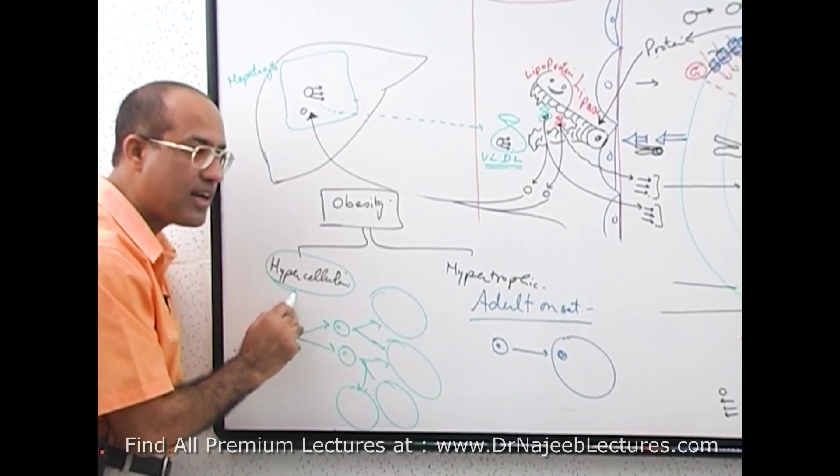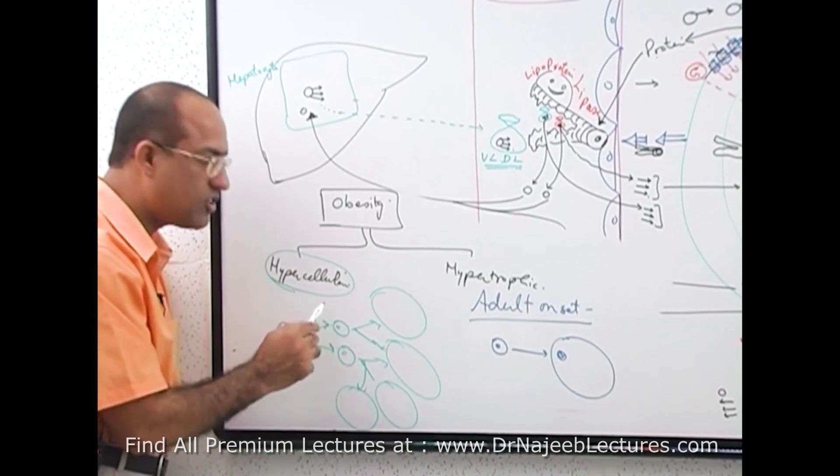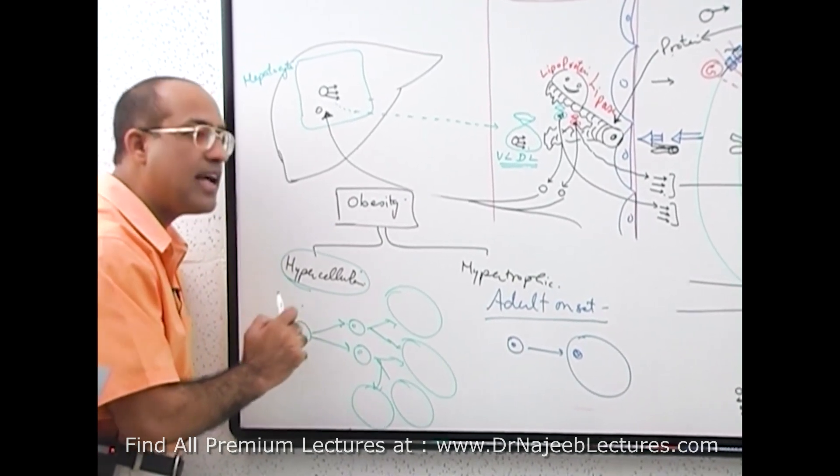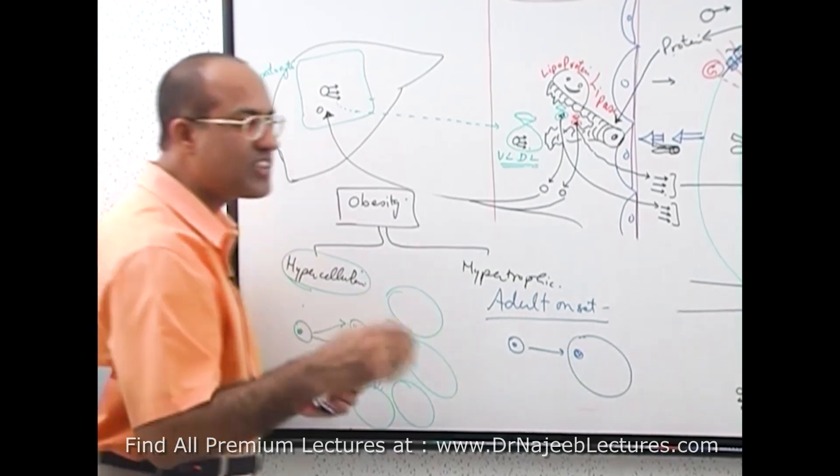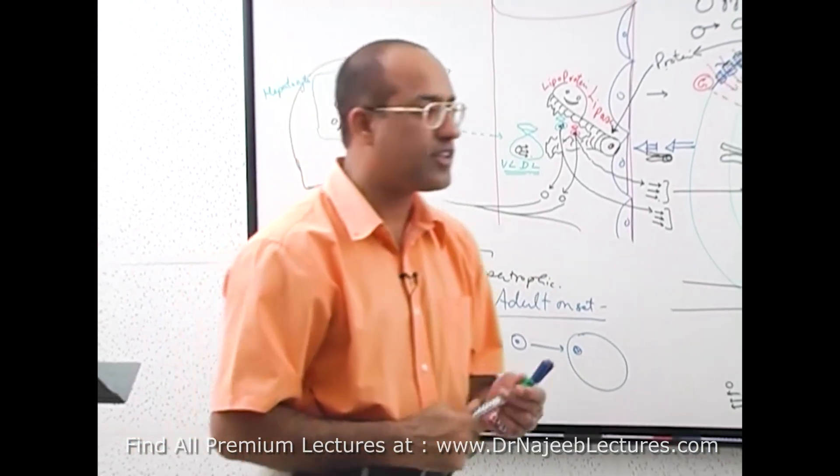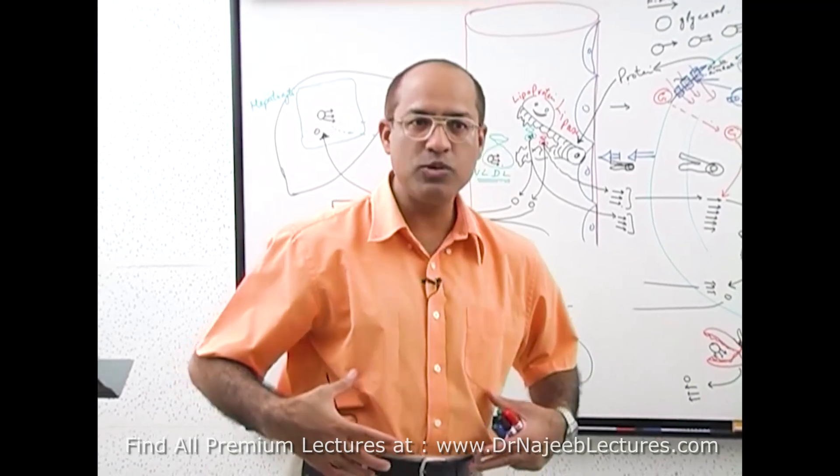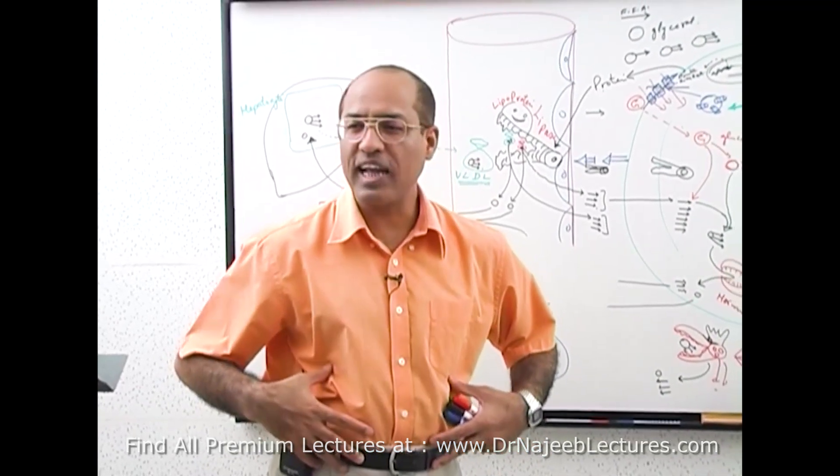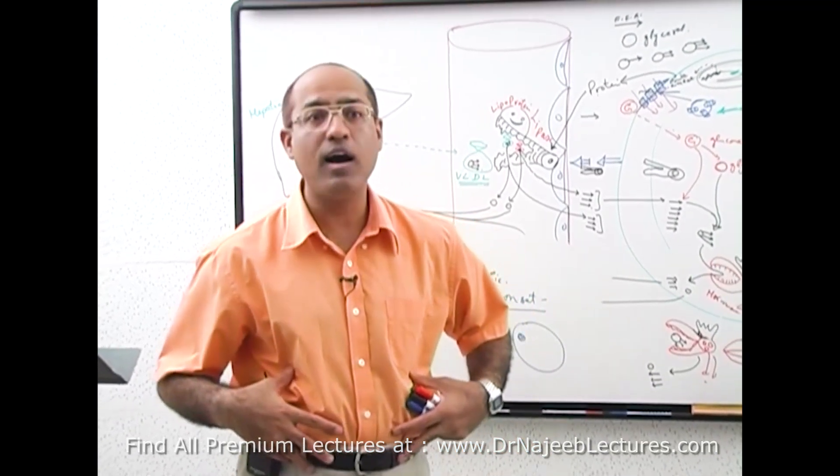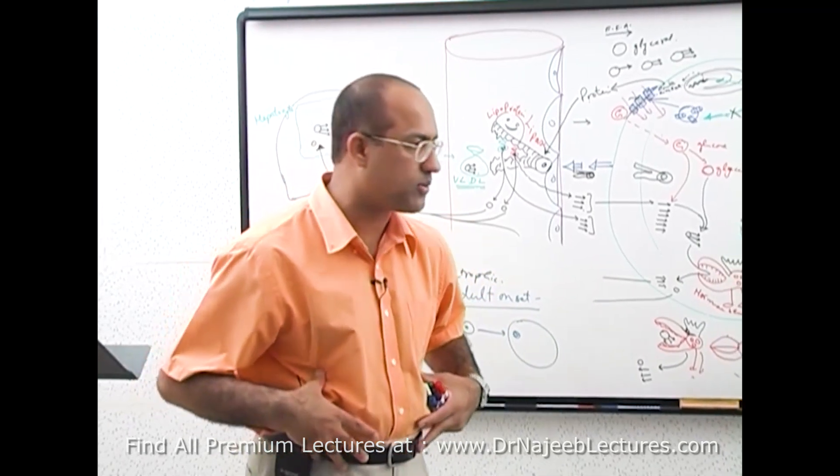This is called hypercellular. The number of cells is increasing. Hypercellular obesity. This is childhood obesity. If mothers overfeed their children at very early stage, the number of fat cells will increase. And when you are having too much excessive number of fat cells, all your life you have trouble controlling your weight.